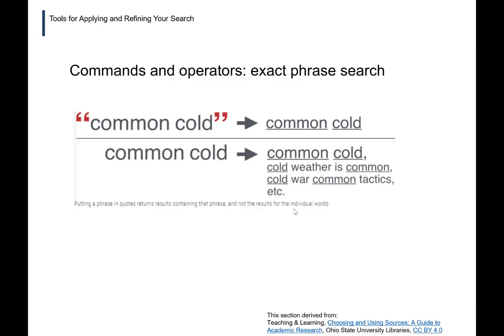Then there are commands and operators. This isn't going to be a comprehensive list, but here are a few you can use. The exact phrase search is potentially a particularly handy one. That's when you wrap a key phrase — something expressed as more than one word — in double inverted commas. The example here is "common cold." What that does is make sure the words are stuck together as a phrase, so you're only getting instances of common and cold when they appear together as a phrase.